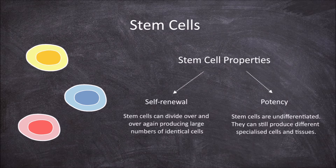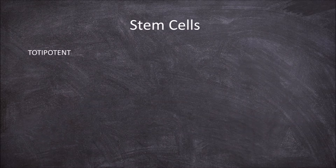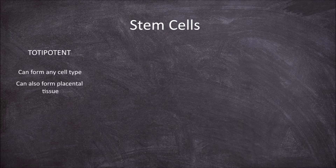When a cell differentiates into a specialised cell it loses its ability to form other cell types. There are several types of stem cells. Totipotent stem cells have the ability to form into any cell type, as well as being able to become placental tissue in mammals. A zygote is a diploid cell that is formed from the fusion of a sperm and an egg. A zygote is totipotent; it consists of a single totipotent cell that has the ability to form into any cell type and the placenta.